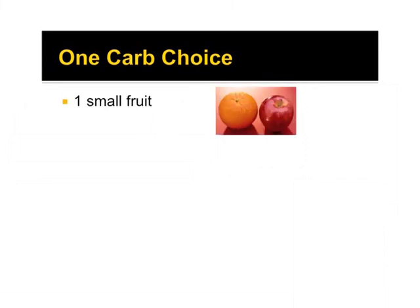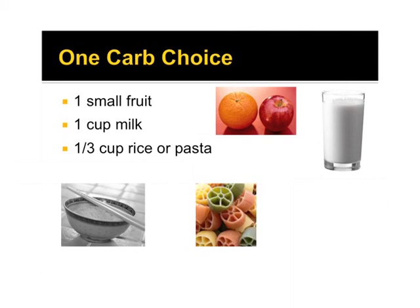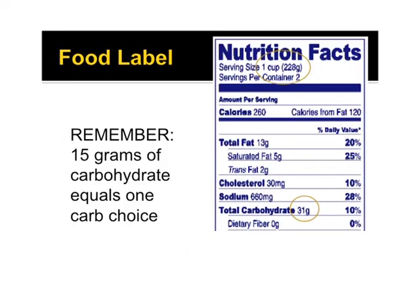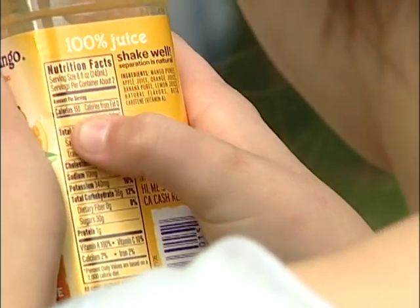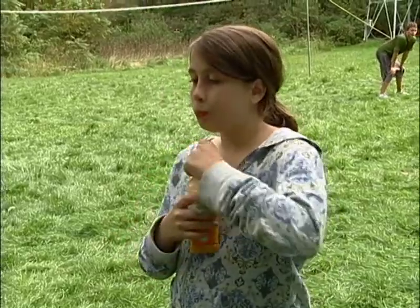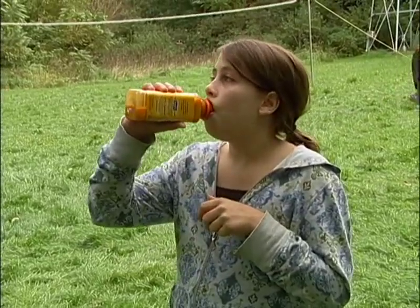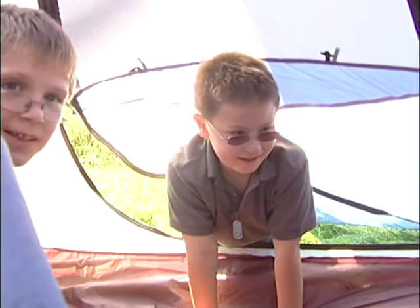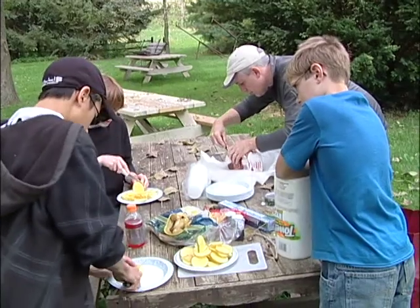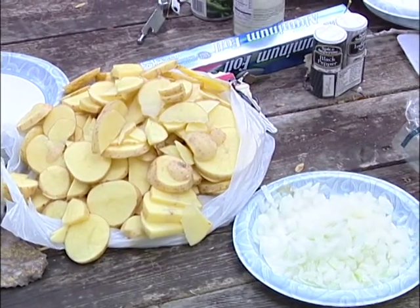Examples of one carb choice include a small piece of fruit, one cup of milk, one-third cup of rice or pasta, and one-half cup fruit juice. The food label is a useful tool to assist in knowing how many carbohydrates are in foods, providing the total carbohydrates for each serving size. Most people with type 1 diabetes will eat between 45 to 75 grams of carbohydrates, or 3 to 5 carb choices, at each meal. The amount of carbohydrates recommended for children and adolescents varies by age, activity, and growth needs.